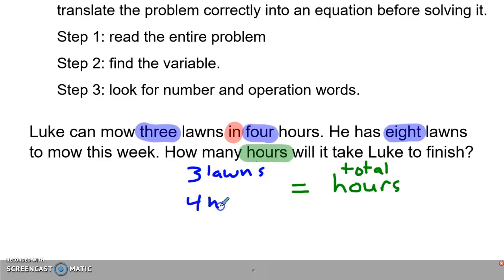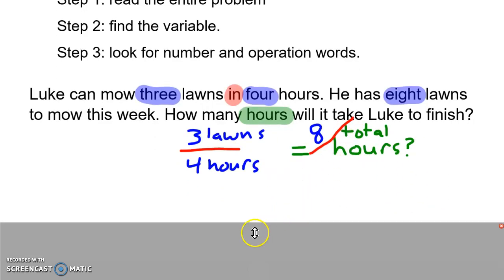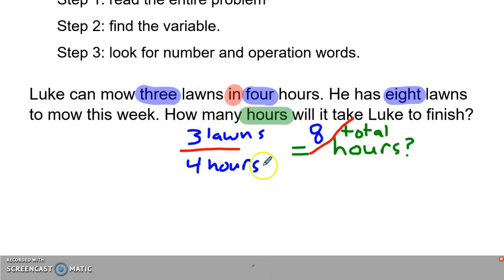Three lawns in four hours, and then here I'm going to have - eight lawns in how many total hours? I can put a question mark so I know that's my variable, that's what I'm trying to find out. Now to clean this up, I can get rid of my labels and turn this label into a variable.